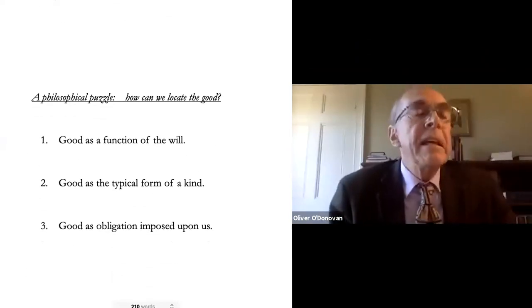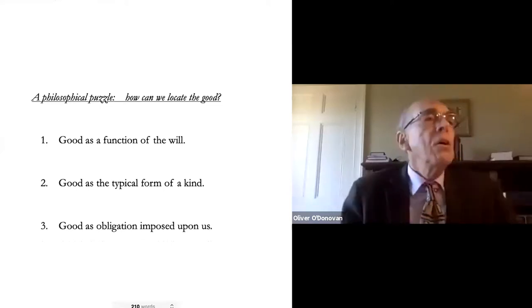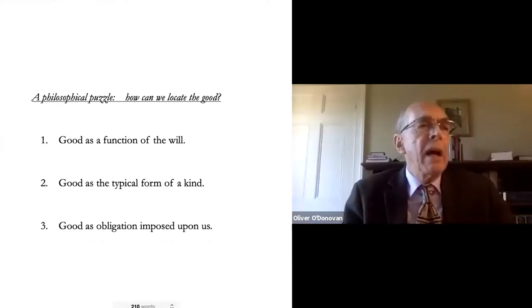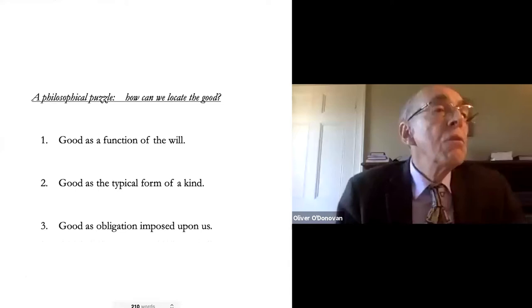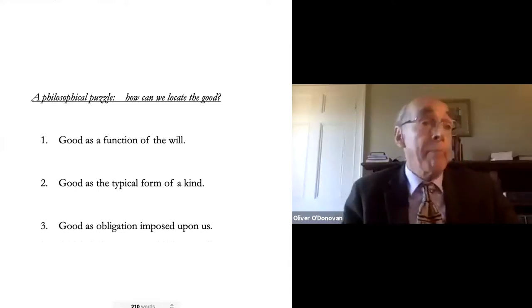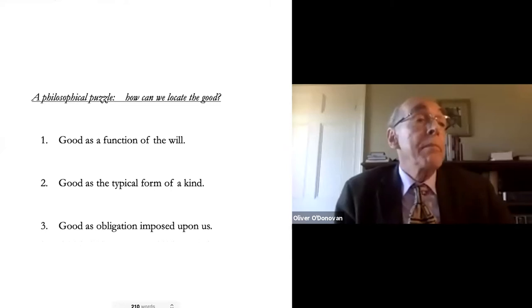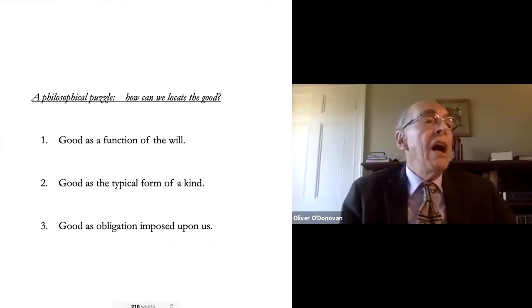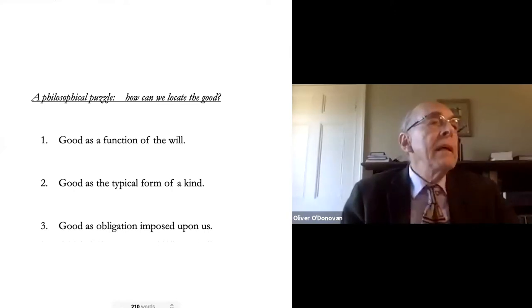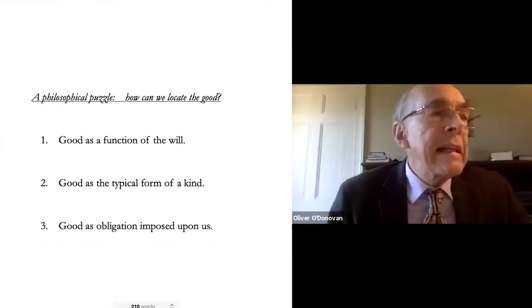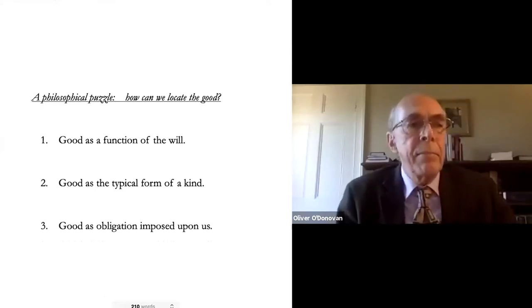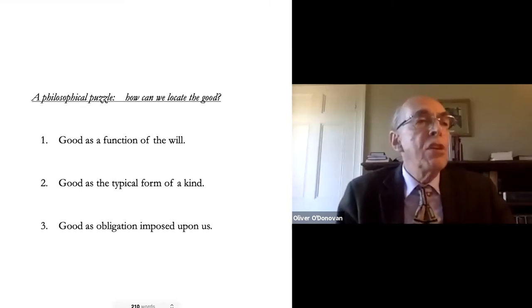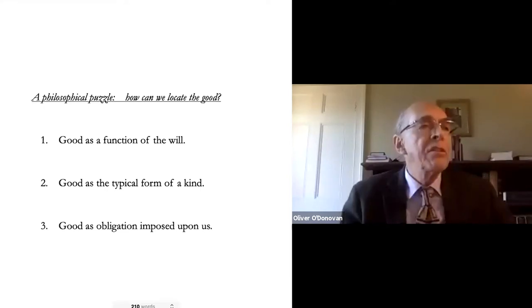Those three places are: first, good located in the will — we speak of the good when we ask, wish, desire, or decide that something should happen. Secondly, good located in the form of a thing, so that to be a good something is to be that thing in an exemplary or typical way. Thirdly, good located in the sense of obligation and duty.